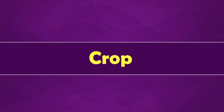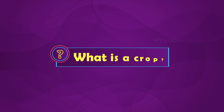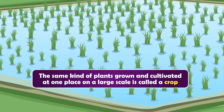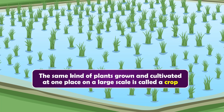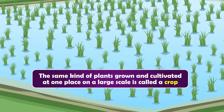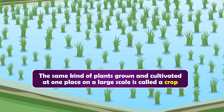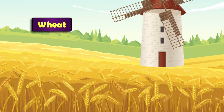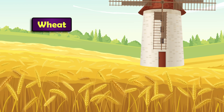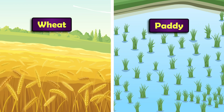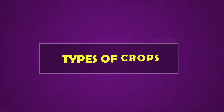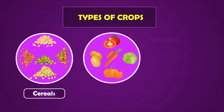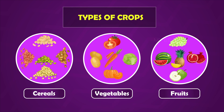A crop is a plant of the same kind cultivated at one place on a large scale to get useful products. For example, all the plants of wheat grown in a field are called the wheat crop. Similarly, all the plants of paddy grown in a field are called the paddy crop. Crops are of different types like cereals, vegetables, and fruits, and these can be classified based on the season in which they grow.